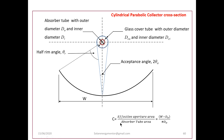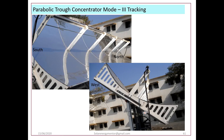The concentration ratio for parabolic trough collectors is defined as the effective aperture area divided by the absorber tube area: (W − DO) divided by (π·DO). This gives an idea of the tube configuration of the parabolic trough — the parabolic reflector with the glass-covered absorber tube situated at the focus.